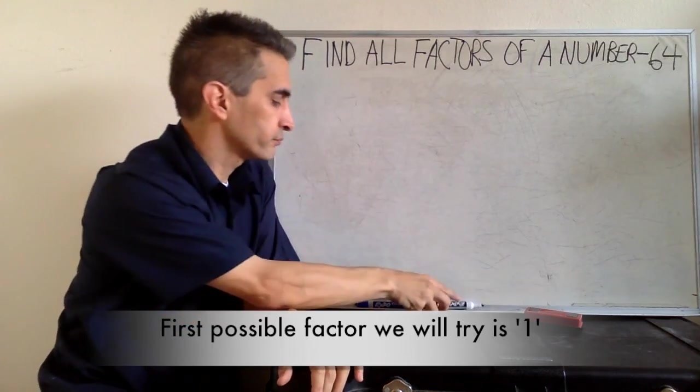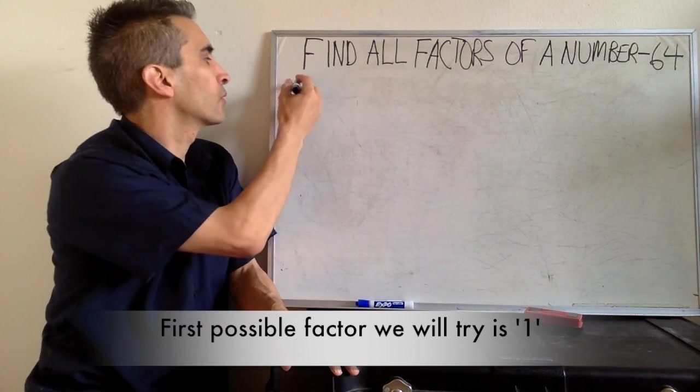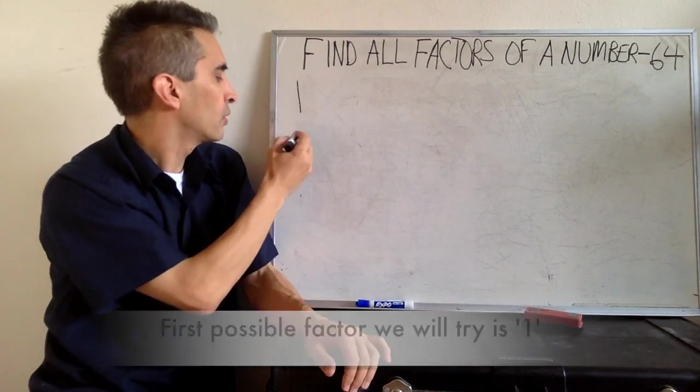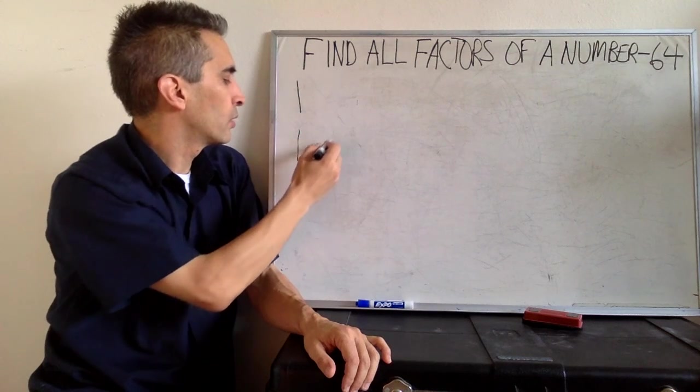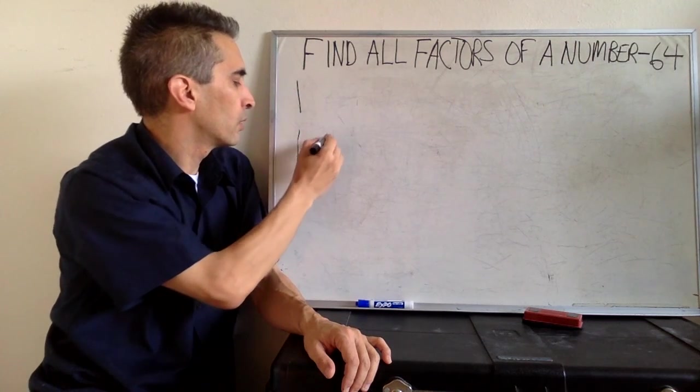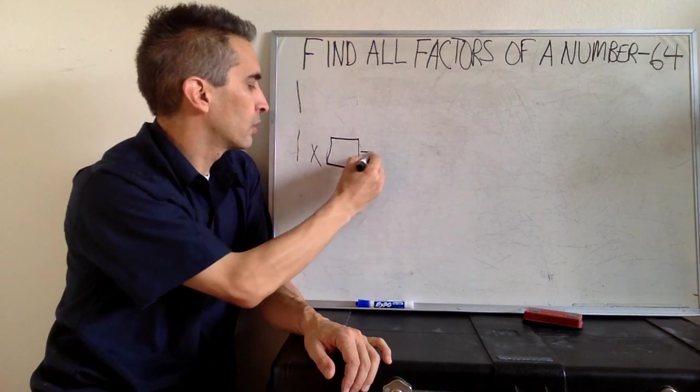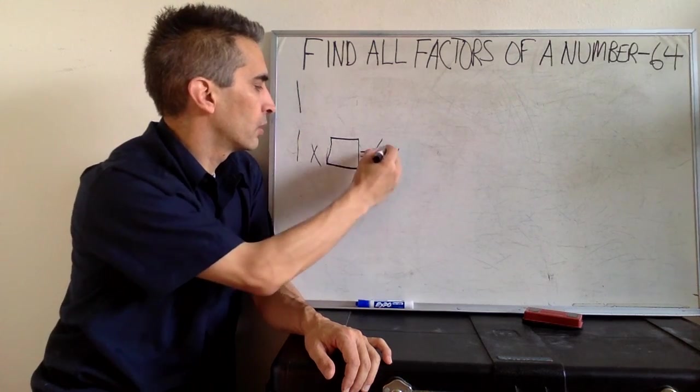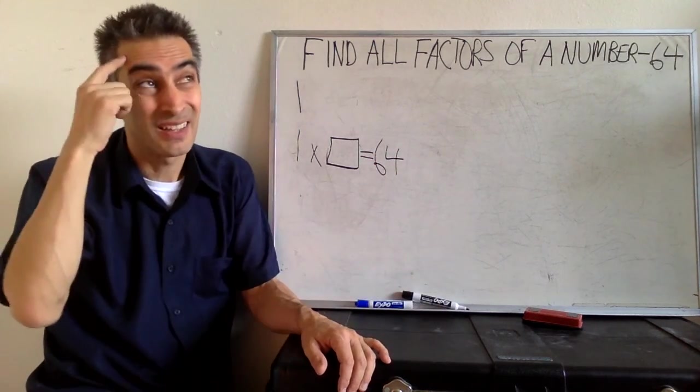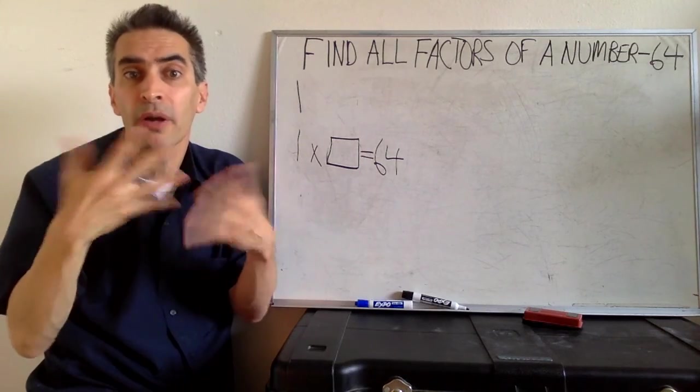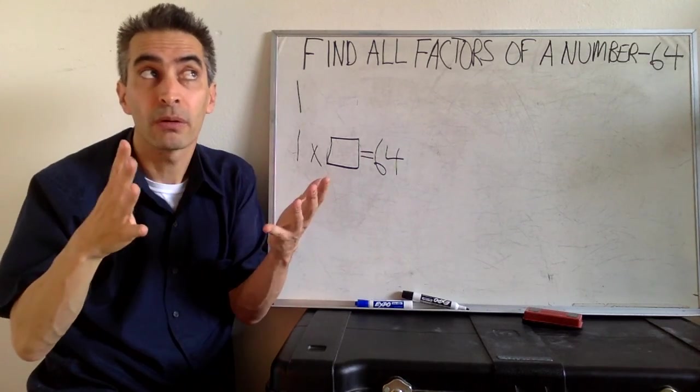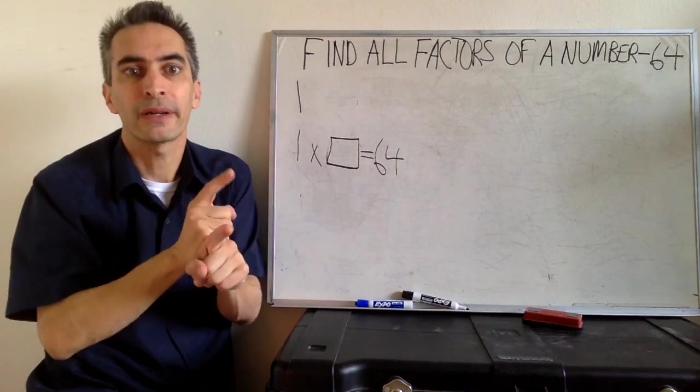We're going to start with 1. Think now. 1 times what equals 64? 64, right.